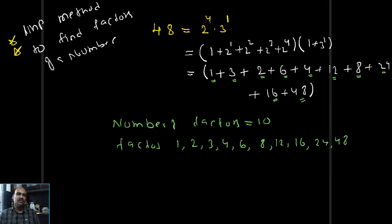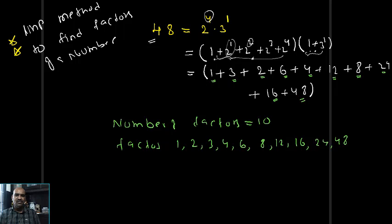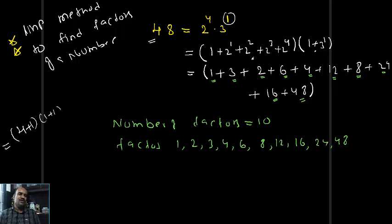For 48: 2^4 can be written as 1 + 2^1 + 2^2 + 2^3 + 2^4, and 3^1 can be written as 1 + 3. The first bracket contains 5 terms (4+1) and the second bracket contains 2 terms (1+1). So number of factors = 5 × 2 = 10. That is, the exponent of 2 is 4, giving 4+1=5 terms; exponent of 3 is 1, giving 1+1=2 terms.